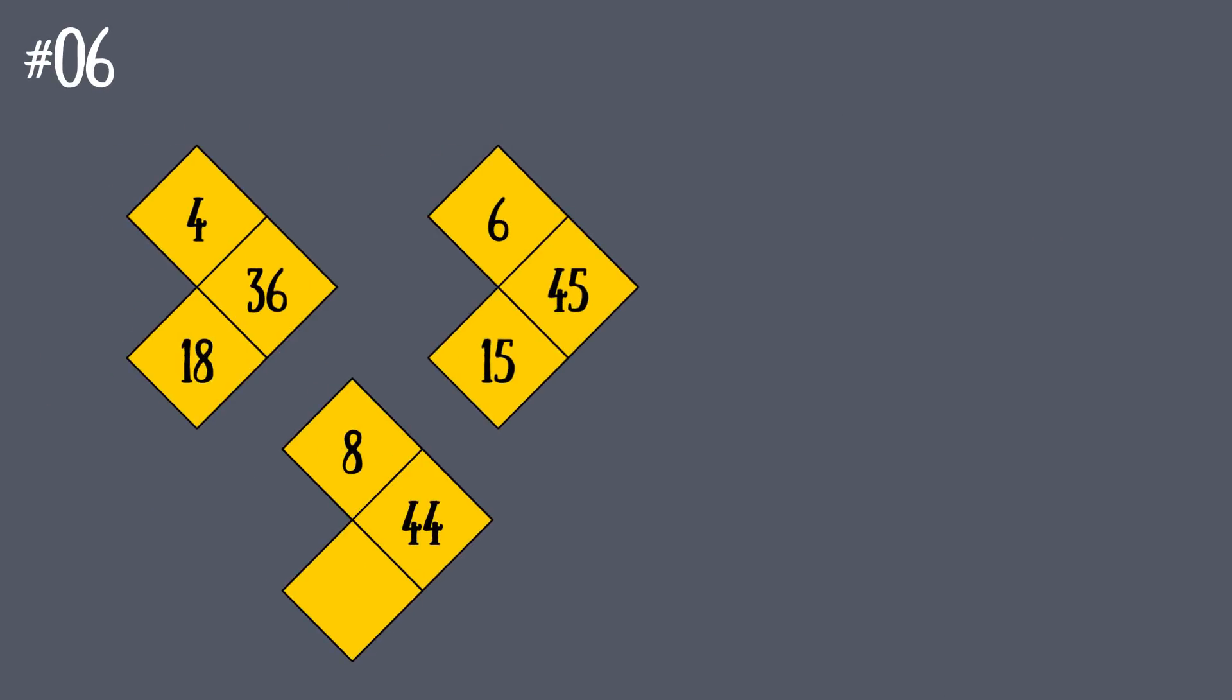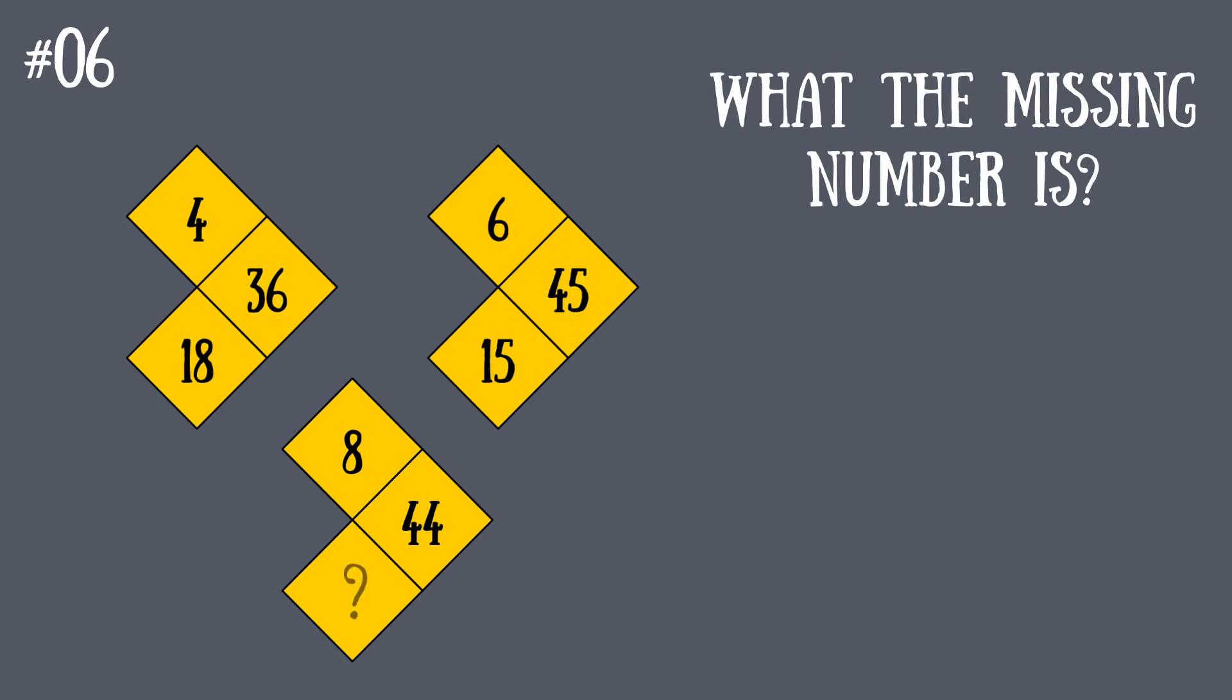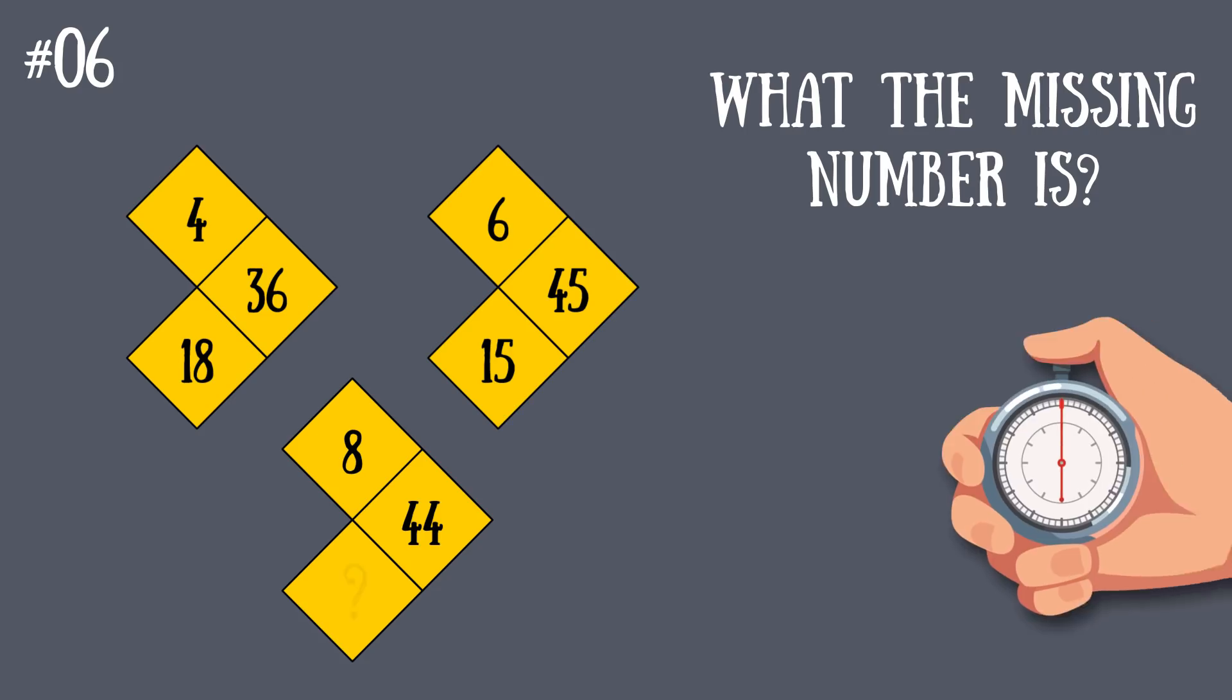Riddle number six: This is how your next task looks like. As you can see, one of the numbers in the bottom arrow is missing. You know what to do.